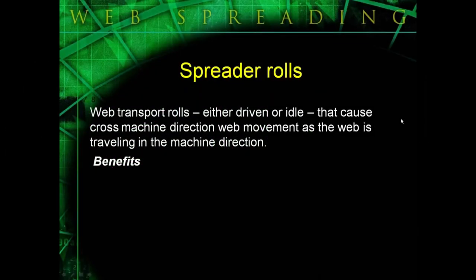Web spreading devices for the purpose of this presentation are defined as rolls that cause cross-machine web movement as a web is flowing through a converting process. There are three main benefits to this spreading action.